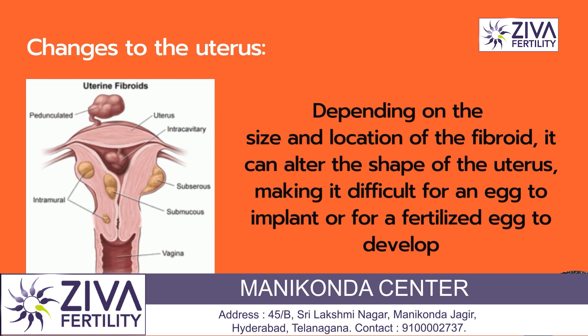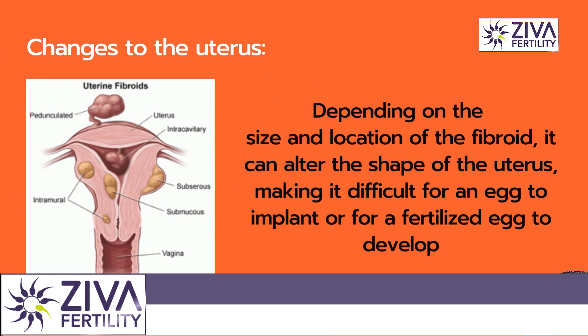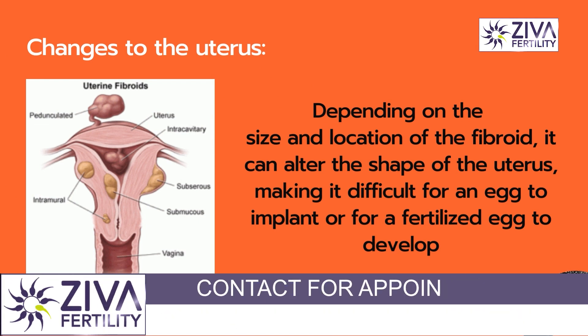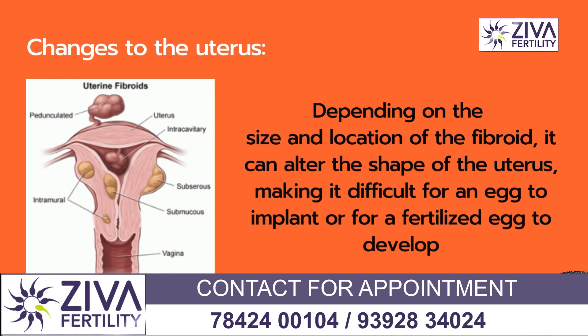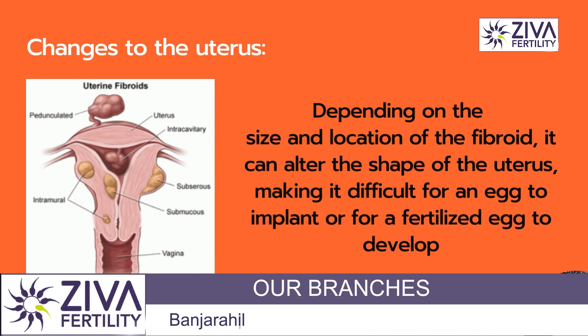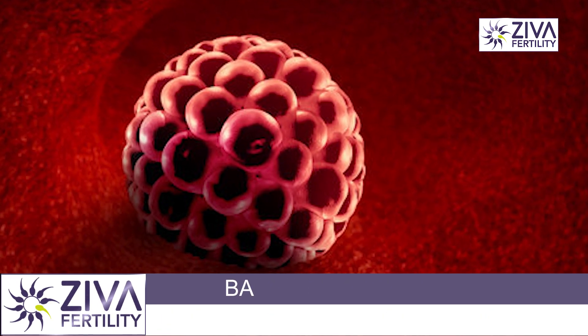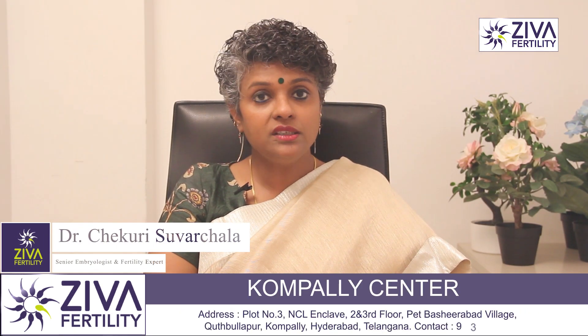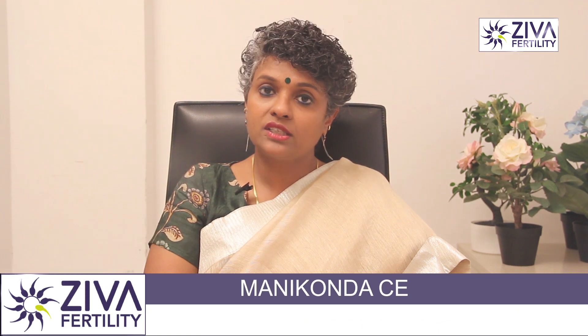Due to the size and location, fibroids can change the shape of the uterus, increasing the chances of uterine distortion. Therefore, when the embryo is formed, implantation can be reduced due to fibroid growth, and the chances of pregnancy can be reduced.